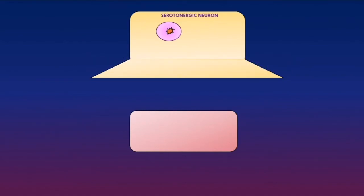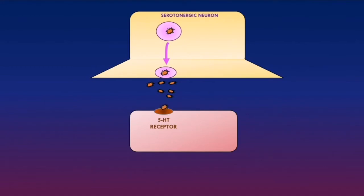When an action potential arrives at the presynaptic neuron of the serotonergic neuron, this causes the vesicles containing serotonin to fuse with the presynaptic membrane, leading to serotonin being secreted into the synaptic cleft. There are 5-HT receptors on the postsynaptic neuron, and serotonin can bind to these receptors to trigger an action potential. On the presynaptic neuron there is a serotonin reuptake transporter, which allows serotonin to be taken back up and packaged into vesicles for the next action potential.